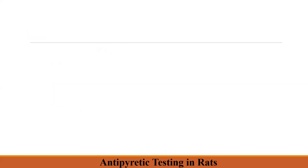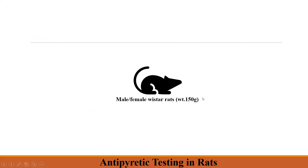The first model is antipyretic testing in the rat. In this case, Brewer's yeast suspension is used which produces fever. For this test, first we have to take male or female Wistar rats whose weight is about 150 grams. The animals are divided into different groups having six animals in each group.